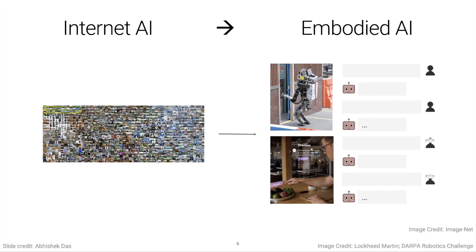Also shown in the lower right, agents that are assistants to people in their daily lives — for example, systems in augmented reality glasses that can provide contextually relevant information as a person goes about their daily life. So this is the realm of embodied AI.